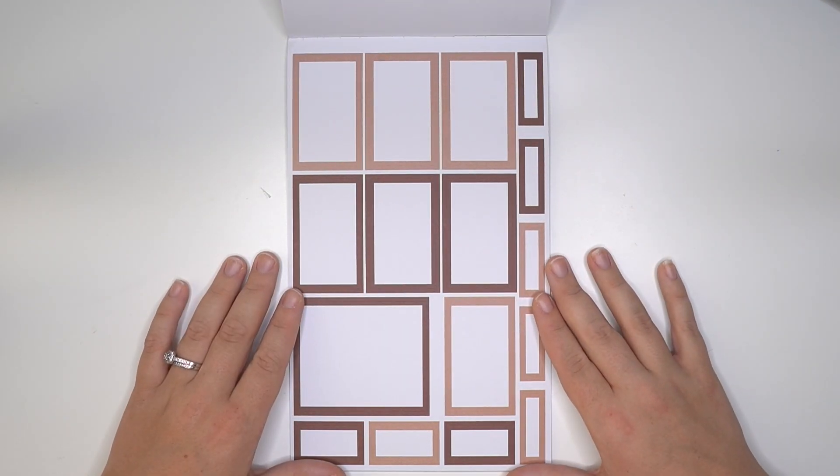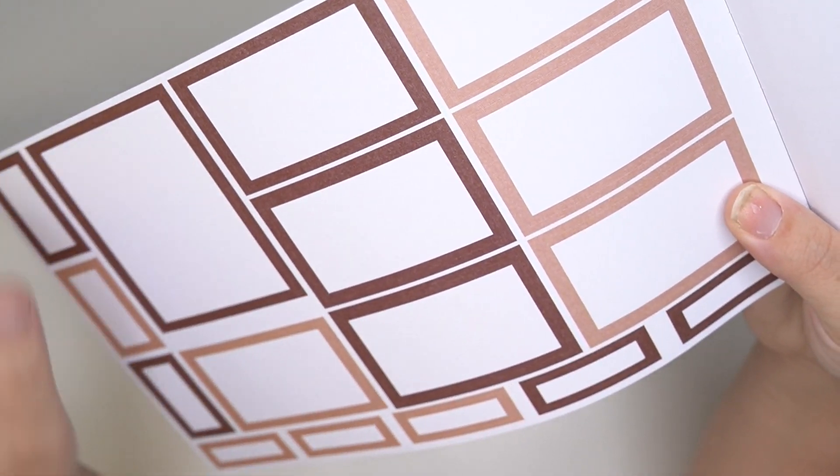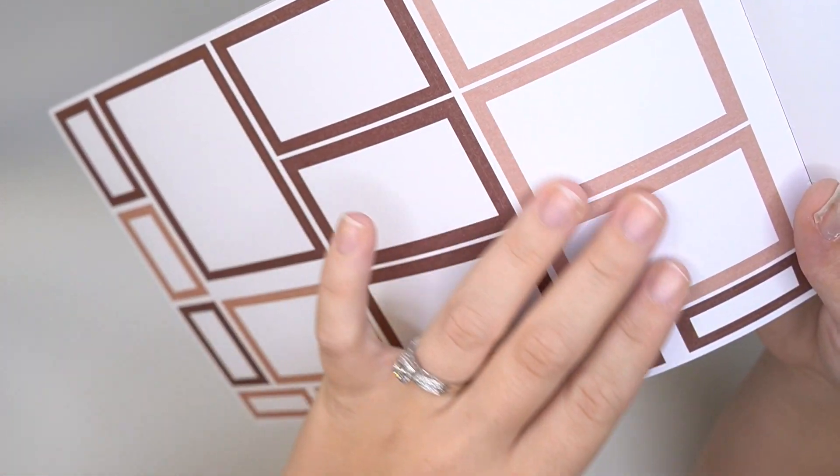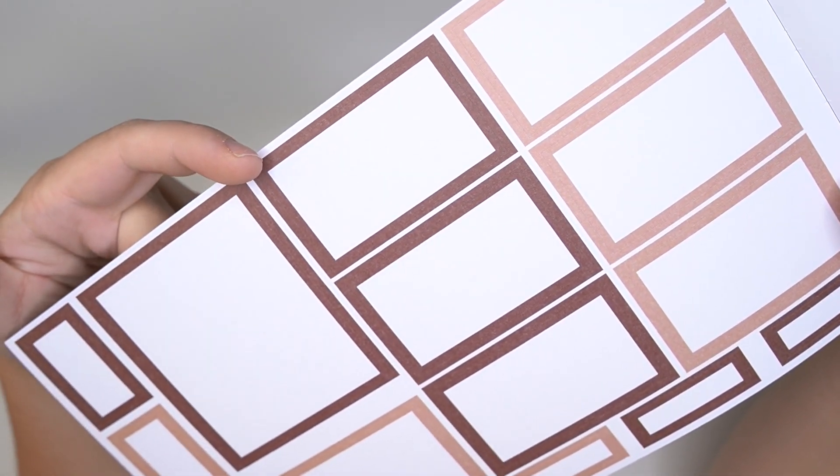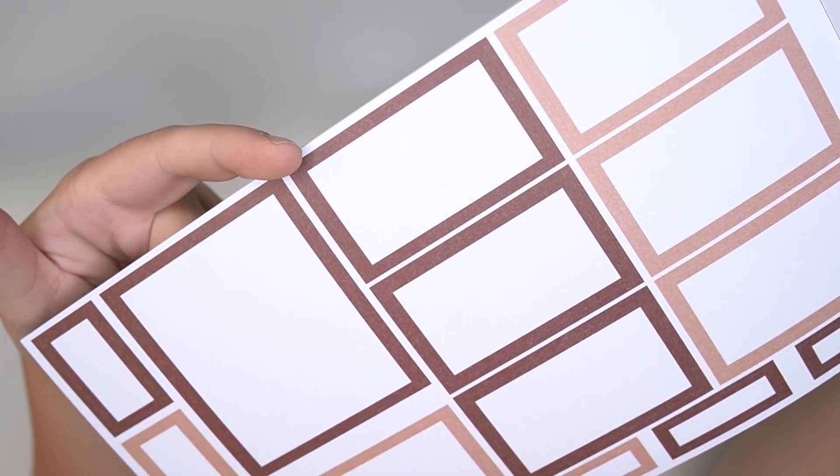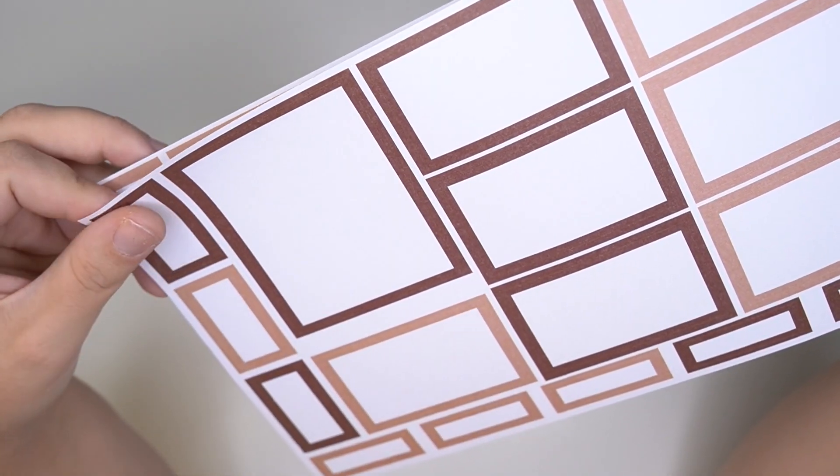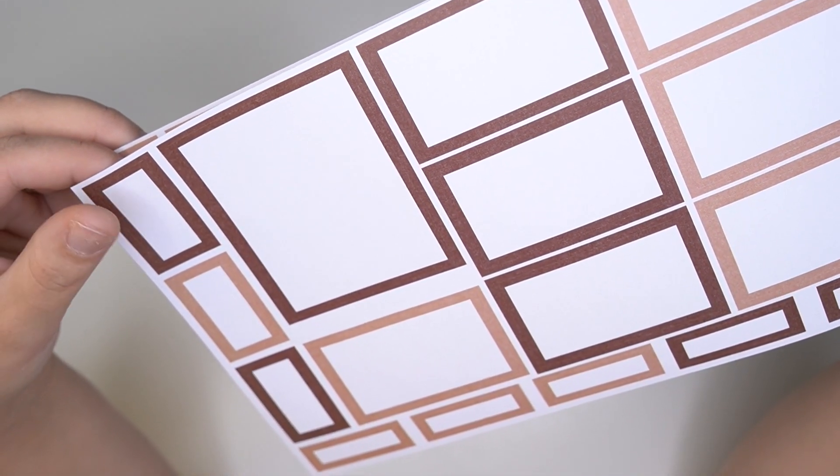And then we move into browns. So we have, let's see here, this is like a really nice light tan color. And then this is almost like a true, like a chocolate brown color, which is really a beautiful color too.